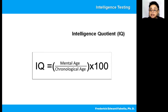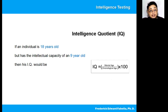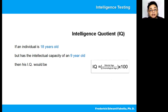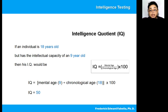Let's take a look at an example. If an individual is 18 years old but has the intellectual capacity of a 9-year-old, then his IQ would be — using the formula — you divide the mental age, which is 9, over the chronological age, which is 18. That gives 0.5, and then you multiply that by 100, so the IQ is 50. That is not a good IQ score because it is lower than what you should have if you are 18 years old.